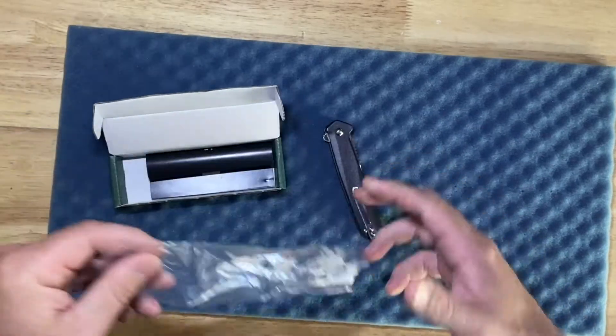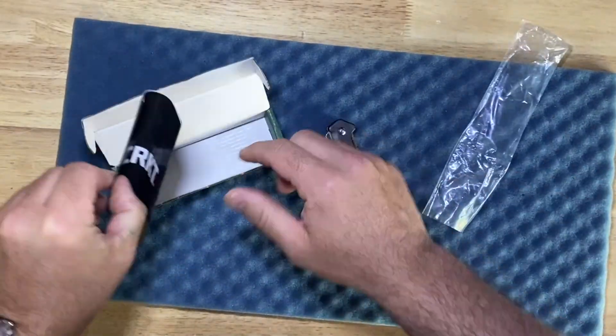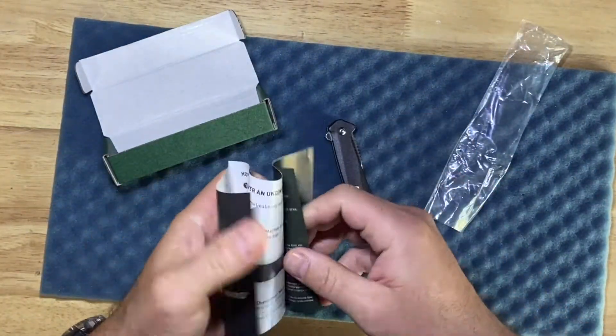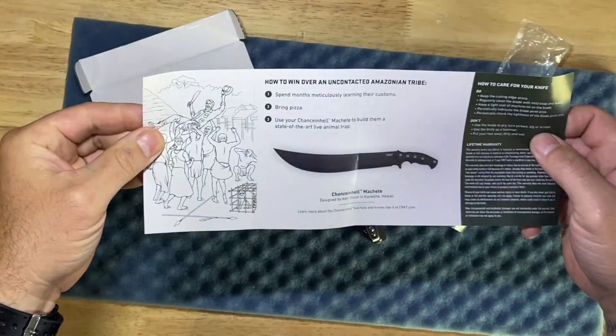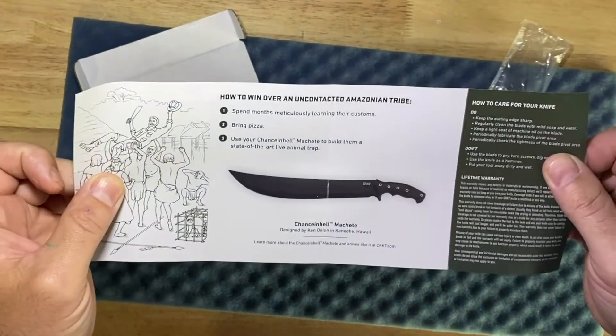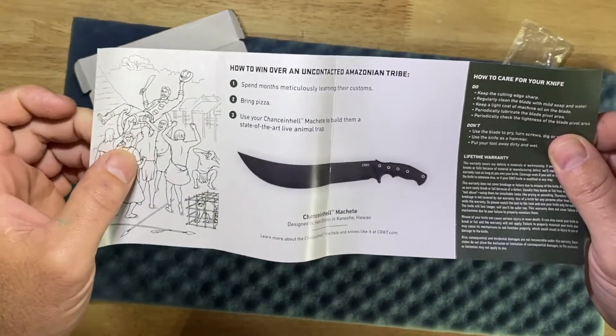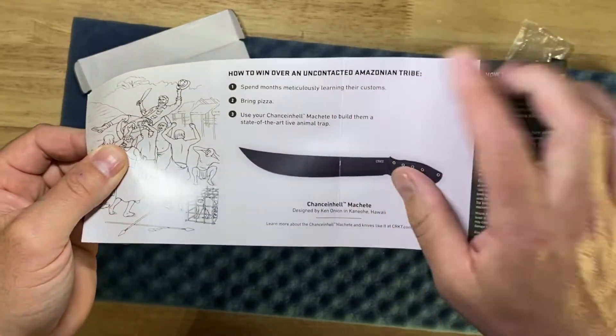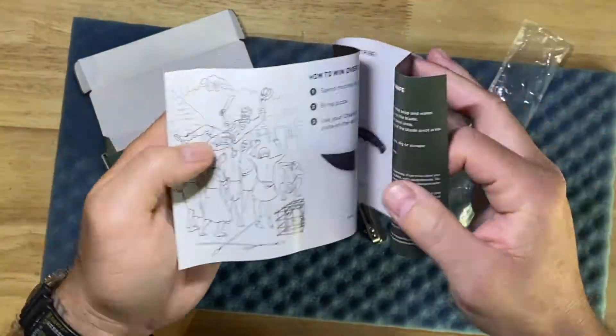In the box you're going to get minimal, but you know how it goes. They got these really cool drawings that they give you - how to win over an uncontacted Amazonian tribe. So you got a little instruction manual there, which is pretty cool and kind of interesting.